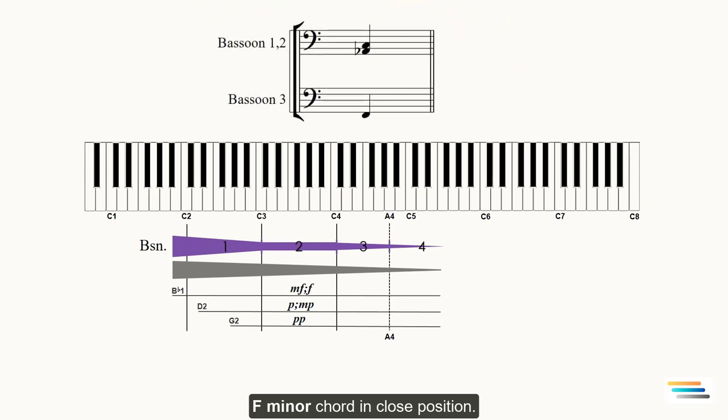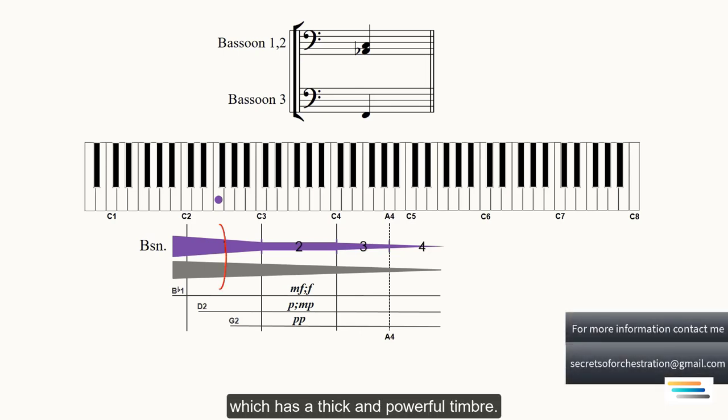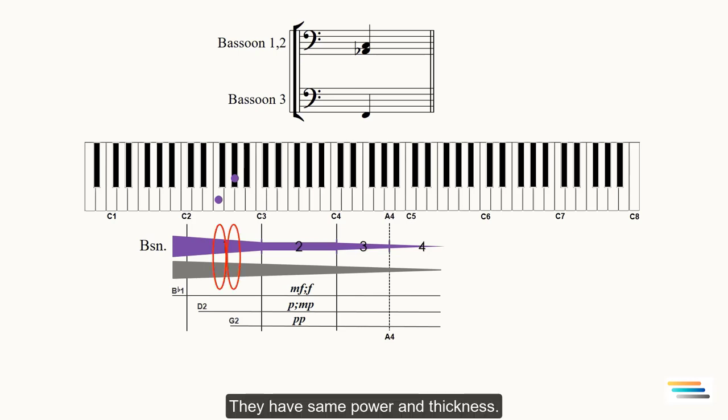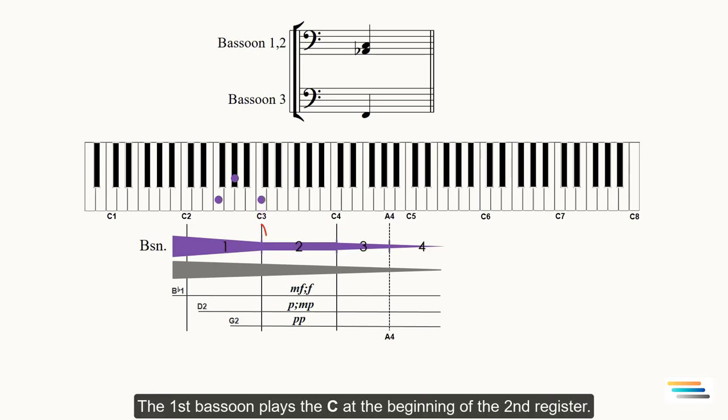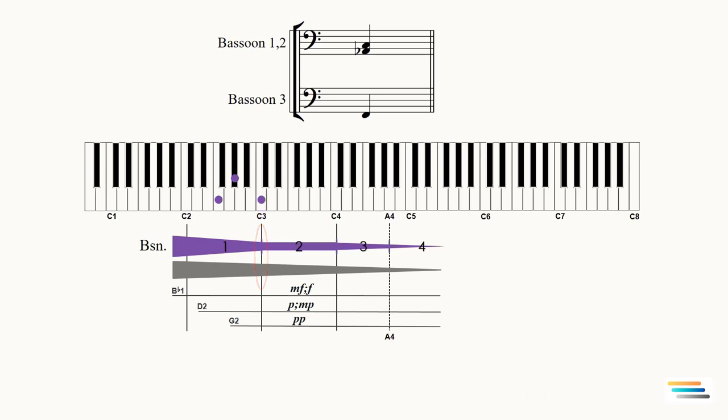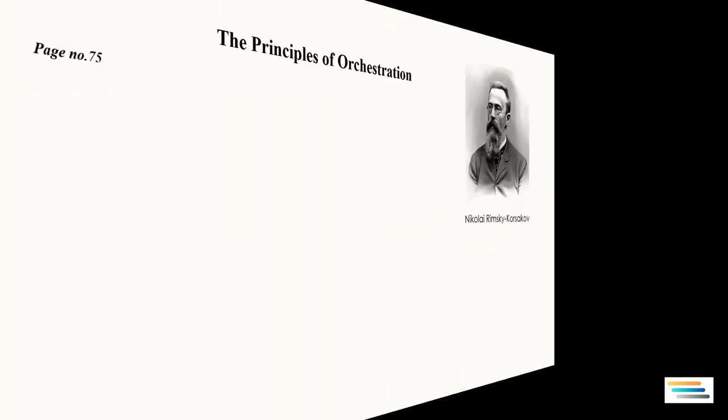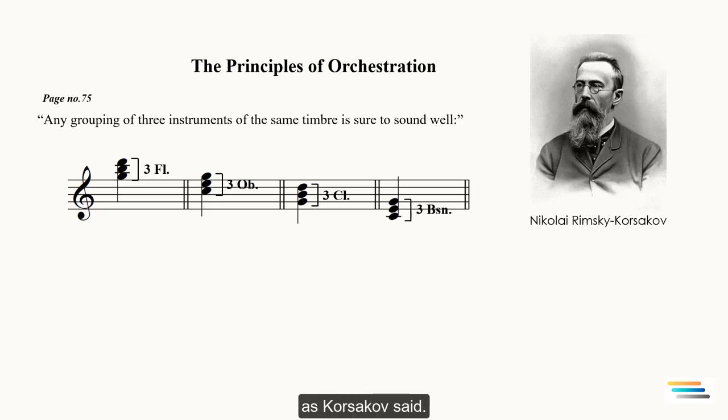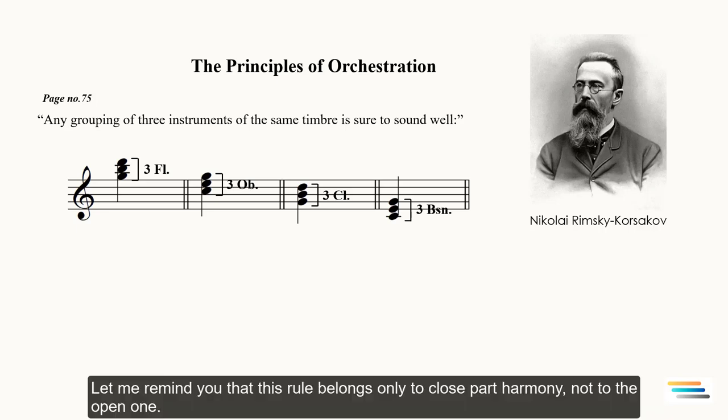F minor chord in close position. The third bassoon plays the F note in the first register, which has a thick and powerful timbre. The second bassoon takes the A♭ in the first register like the third bassoon. They have same power and thickness. The first bassoon plays the C at the beginning of the second register. This chord is well balanced because any grouping of three instruments of the same timbre is sure to sound well, as Korsakov said. Let me remind you that this rule belongs only to close part harmony, not to the open one.